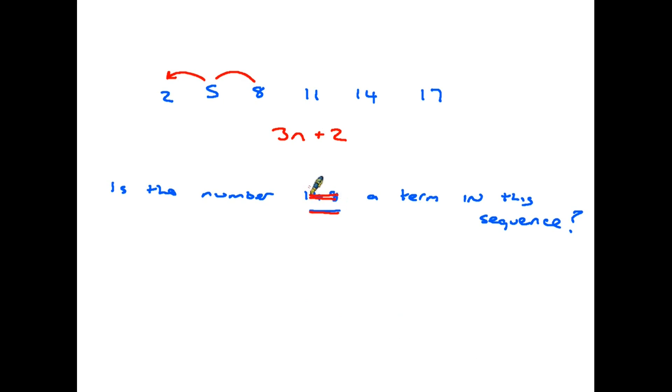Let's make a slight change to the question. Let's assume we are being asked whether the number 149 is a term in this sequence. So again in this case we would write 3n plus 2 equals 149. Therefore 3n equals 149 minus 2. 3n is therefore 147. So n is equal to 147 over 3. In this case our answer is 49. So yes, 149 does appear in this sequence and in fact it's actually the 49th term in the sequence.